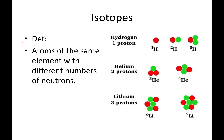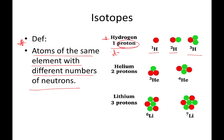Here's the official definition of an isotope: isotopes are atoms of the same element with different numbers of neutrons. Here are some examples. Hydrogen comes in three forms, referred to as hydrogen-1, hydrogen-2, and hydrogen-3. All of them contain one proton, because proton number tells you the identity — if it contains one proton, it is hydrogen.